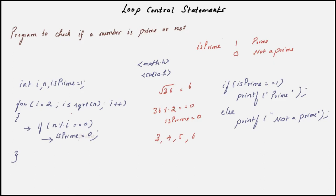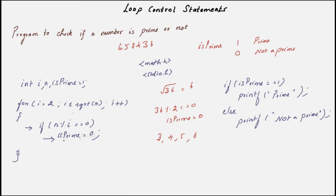Once we found that 36 mod 2 is 0, we don't have to check all the other numbers. If n mod i is 0, we should set isPrime to 0 and stop the loop — it is totally meaningless to continue. Imagine entering a 6-digit number; in the first iteration you find it is not prime, yet the loop keeps running. So is it possible to stop the loop in the middle? Yes — that is why we have the break statement. You just give break within the if block, and the loop stops immediately.